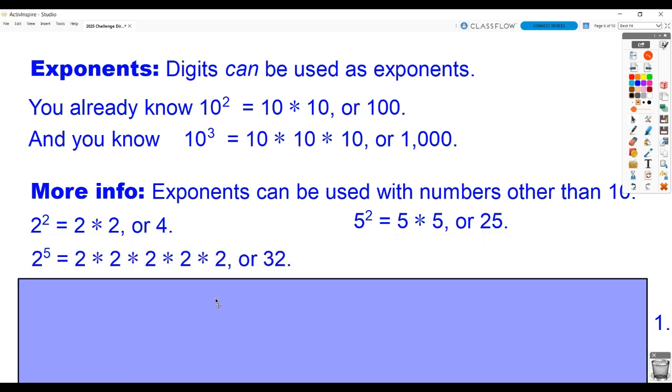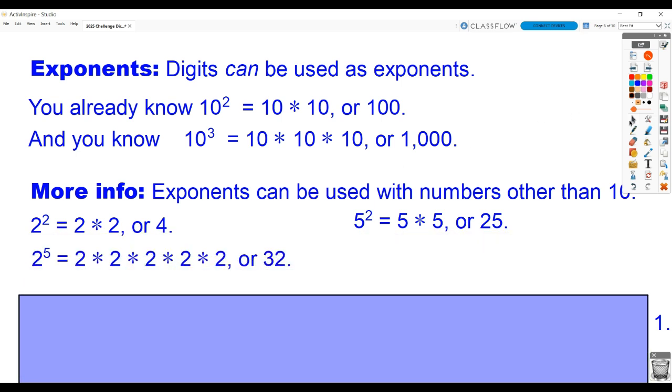You can attach an exponent to any number. For example, if I did 2 to the 2nd power, that means 2 once times 2 a 2nd time. 2 times 2 is 4. 5 to the 2nd power, that means I'm going to write 5 twice as a factor. 5 times 5, or 25. What about 2 to the 5th power? Well, that would mean I'm going to write 2, 1, 2, 3, 4, 5 times in a long multiplication chain, and that would be worth 32.